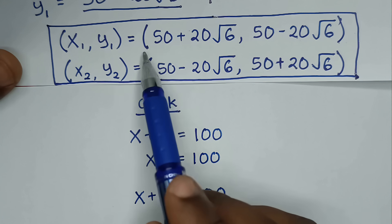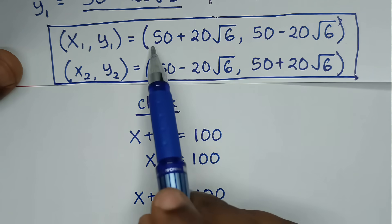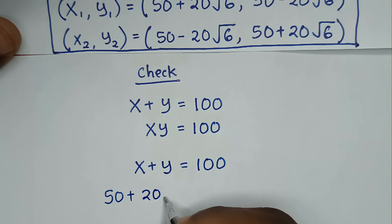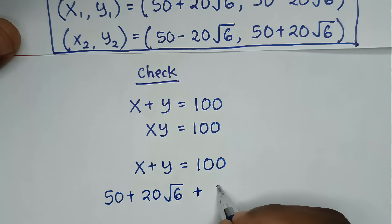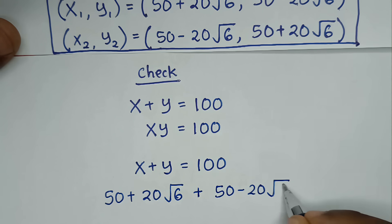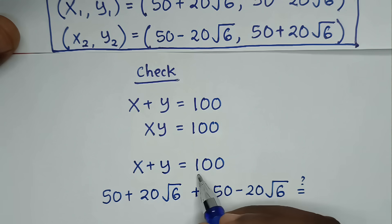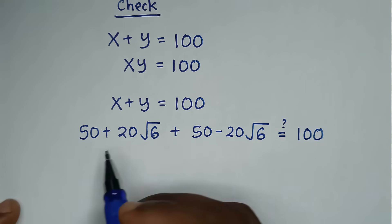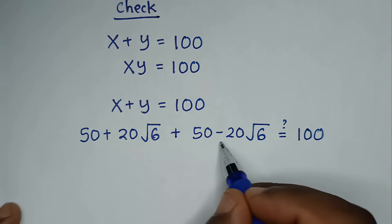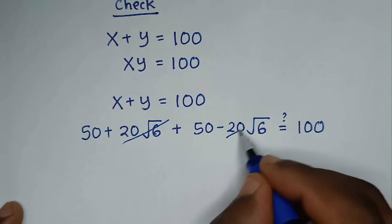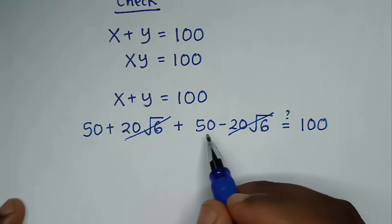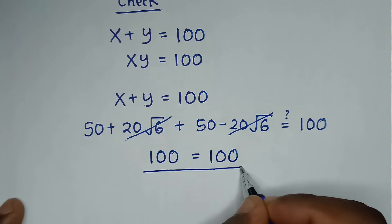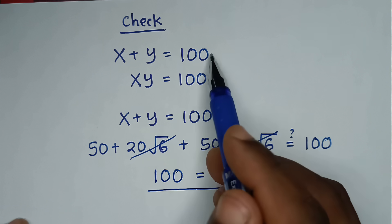Checking the first equation x plus y equals 100 using the first solution: x plus y equals (50 plus 20 square root of 6) plus (50 minus 20 square root of 6). The 20 square root of 6 and minus 20 square root of 6 cancel, leaving 50 plus 50, which is 100. So left side equals right side — it is true for the first equation.